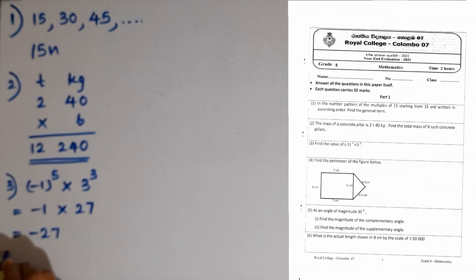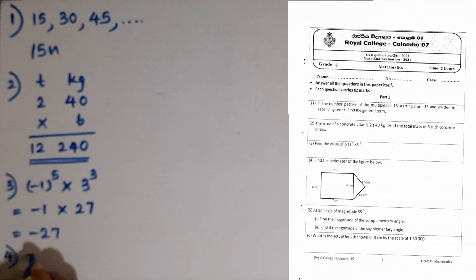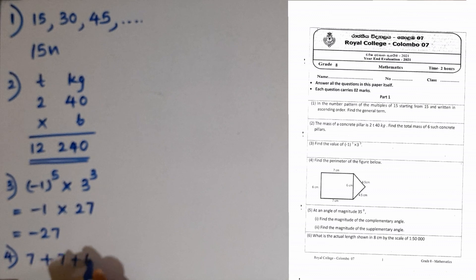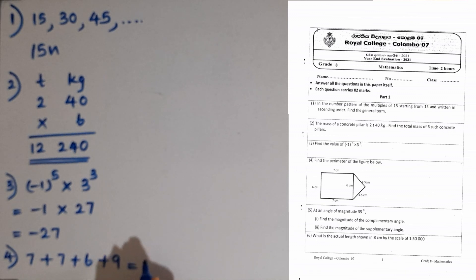Question number 4. Find the perimeter of the figure below. We have to add the surrounding lengths of this figure: 7 plus 6 plus 5 plus 4.5 is 9. Then the answer is 29 centimetres.